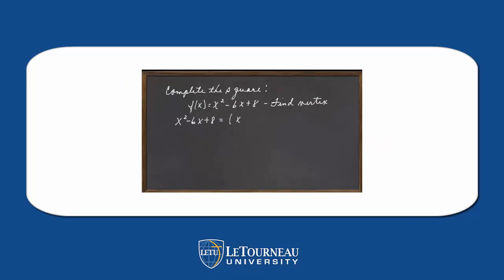Let's suppose we have x² - 6x + 8. First thing you do is group the x's together. Then you take half of the -6 and square it. That gives you 9. Don't forget, if you add 9, you must also subtract 9.